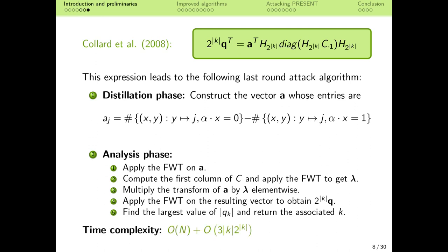The time complexity thus becomes O(n) for the distillation phase and 3 fast Walsh transforms for the analysis phase, that is O(m · 2^m) where m is the number of bits of the key guess.